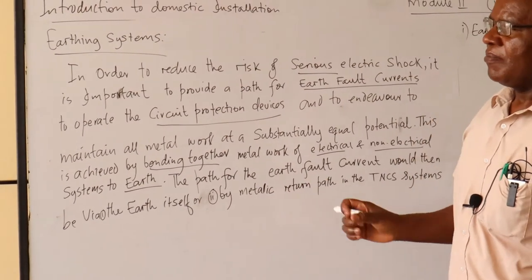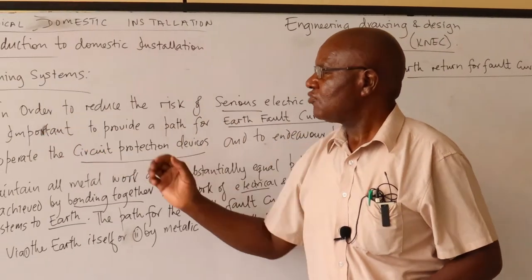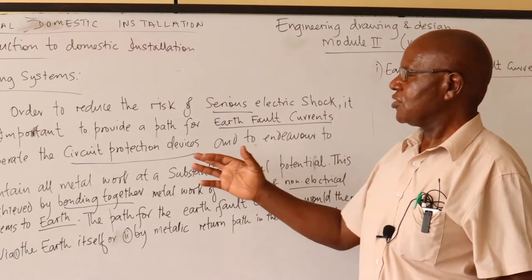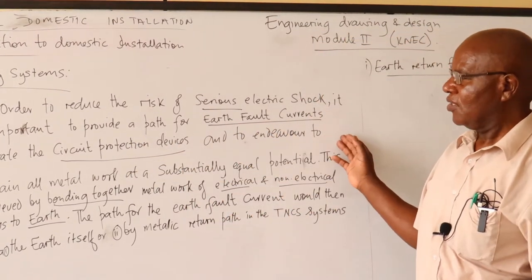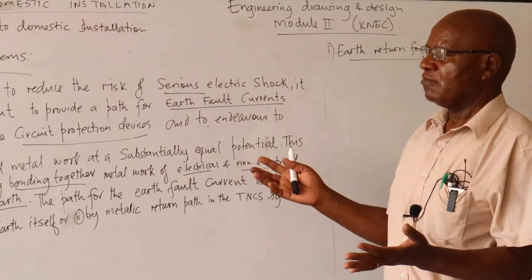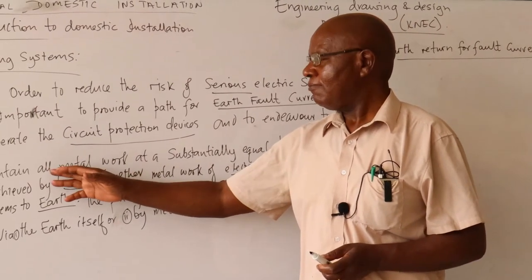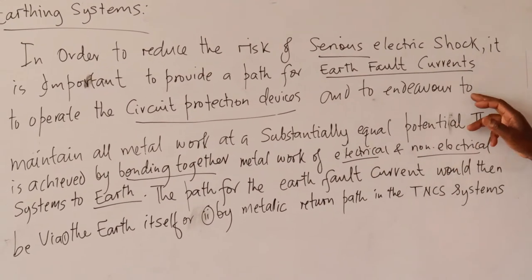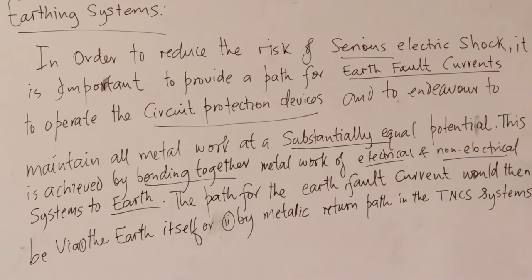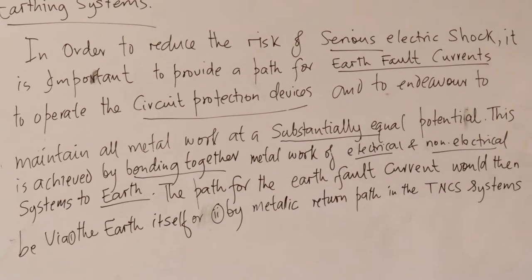Earthing is one means of providing protection in electrical installations. The key thing is that in order to reduce the risk of serious electric shock, it is important to provide a path for earth fault currents to operate the circuit protection devices — the fuses or circuit breakers — and also to endeavor to maintain all metalwork at a substantially equal potential. If you have metalwork at substantially equal potential, if you touch one area and another, the chances of getting a shock are minimum.